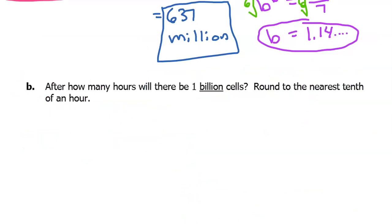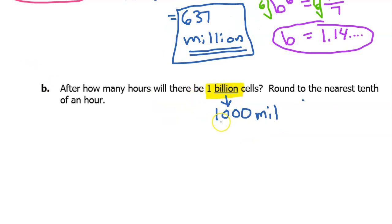Part B, after how many hours will there be 1 billion cells? Round to the nearest 10th of an hour. So before we even begin this last part, please understand that our parameters are in millions. Our A value and our B value that we use to build the function, everything's in millions. So we really need to convert from billions to millions. So remember that this is a million. So there's a thousand. There's a million. If I add an extra three zeros on here, now it's a billion. So those extra three zeros mean times 1,000. So in other words, 1 billion is 1,000 million.